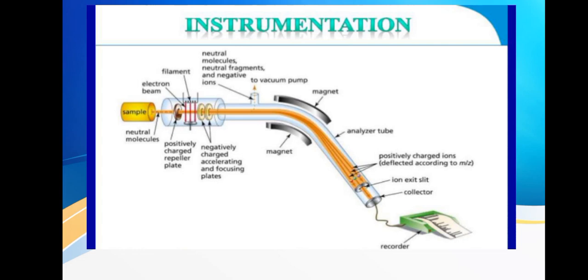For instrumentation, you can see the sample, then you have the neutral molecules, positively charged repeller plates, electron beam, the filament, negatively charged accelerating and focusing plates. We have neutral molecules, neutral fragments, and negative ions to vacuum pump. We have our magnets, the analyzer tube, positively charged ions which are deflected according to mass-charge ratio. We have the ions exiting at the ion exit slits, the collector, and finally our recorder.